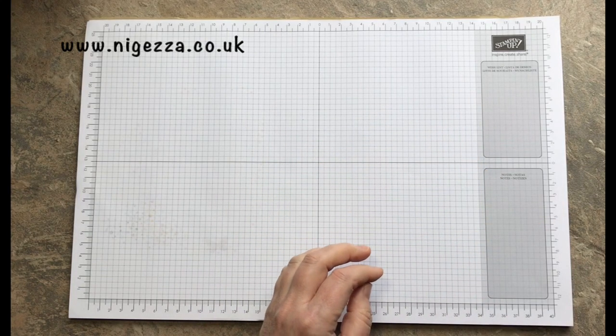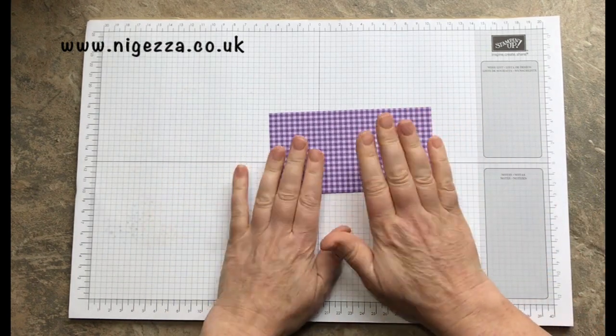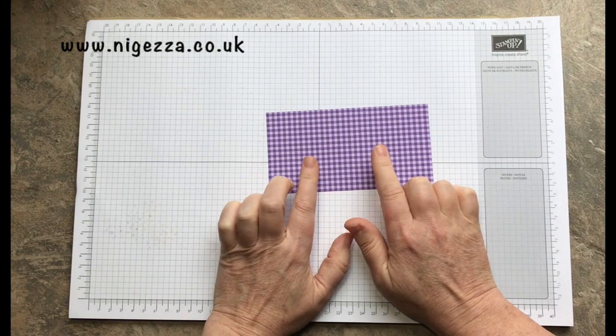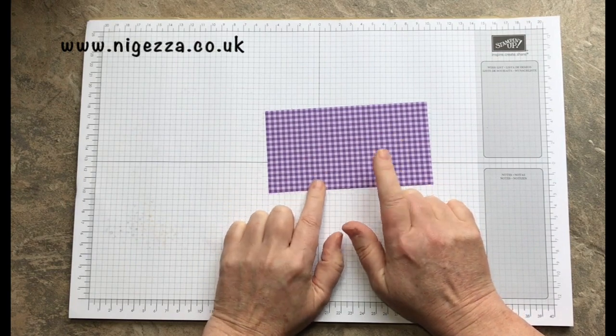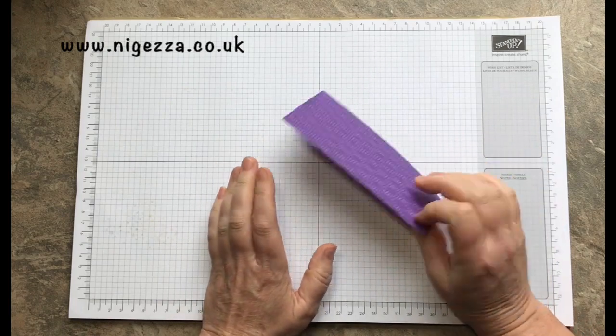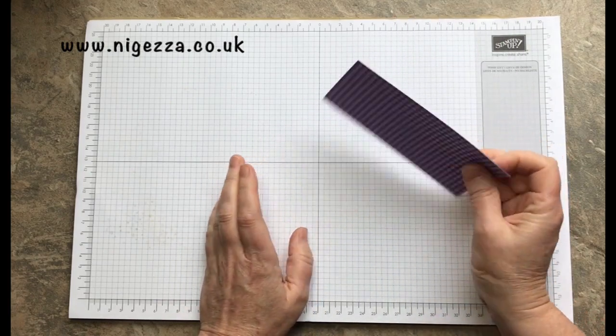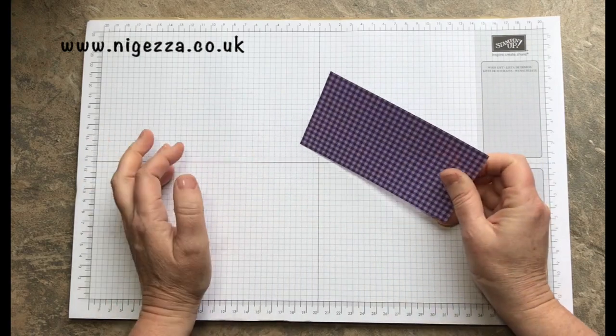But these don't tempt me but my children do like them. I am moving away from Christmas, I've been doing lots and lots of Christmas. So this is gorgeous grape from our six by six color family paper packs.